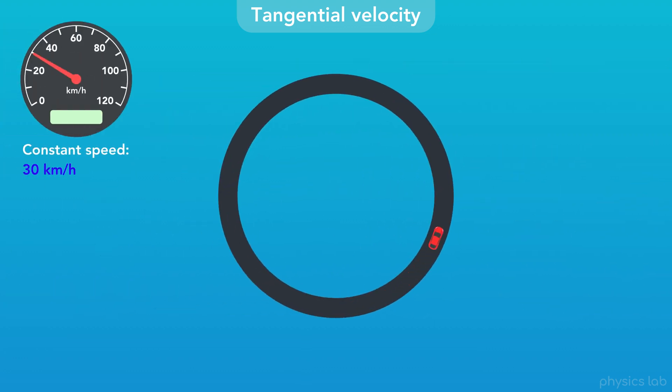So, as this car drives around in a circle, the direction the car is pointing always falls onto a line that is tangent to the circular path. So we call this the tangential velocity.